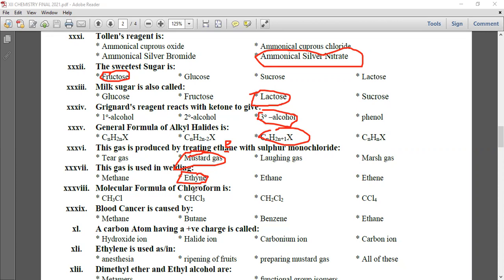Molecular formula of chloroform is CHCl3. Iodoform is CHI3. Benzene causes blood cancer. A carbon atom having a positive charge is carbonium. Positive ions have 'ium' suffix - carbon gives carbonium, benzene gives benzonium, oxygen gives oxonium. Ethylene is used in anesthesia, ripening of fruits, and preparing mustard gas. All of these is the answer.